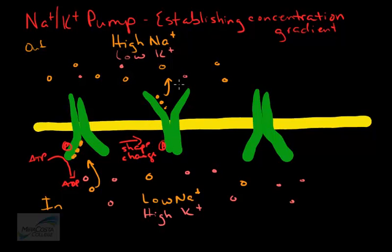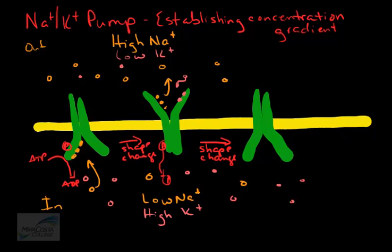When the protein is open to the extracellular side, potassium ions bind. When the phosphate is cleaved off — just as before — the protein returns to its original shape, releasing potassium ions to the intracellular environment, contributing to the already high concentration of potassium inside the cell. This establishes and maintains the gradient of high sodium outside, low sodium inside, low potassium outside, and high potassium inside.